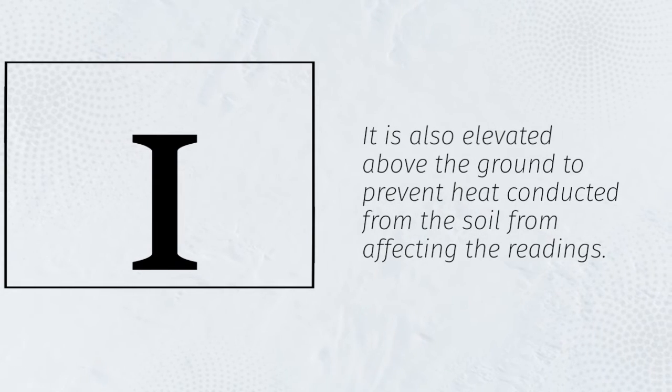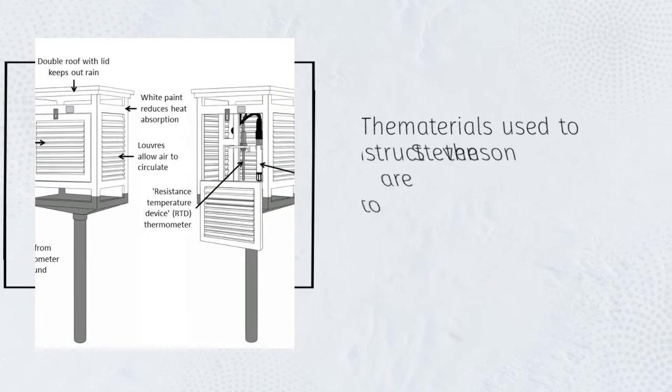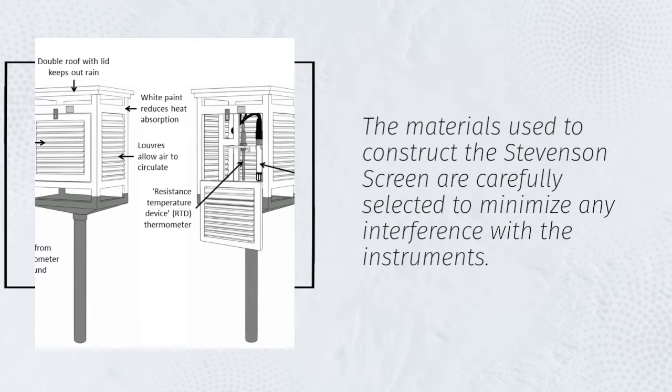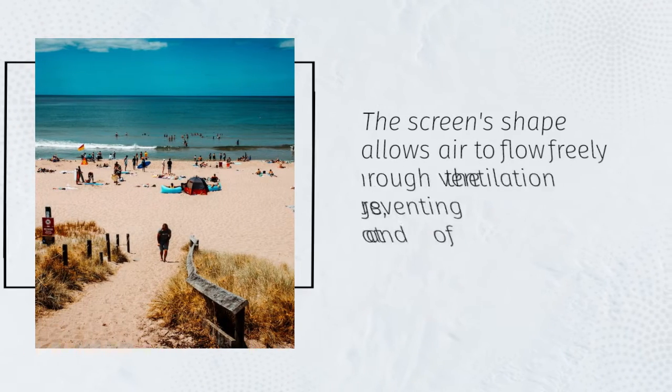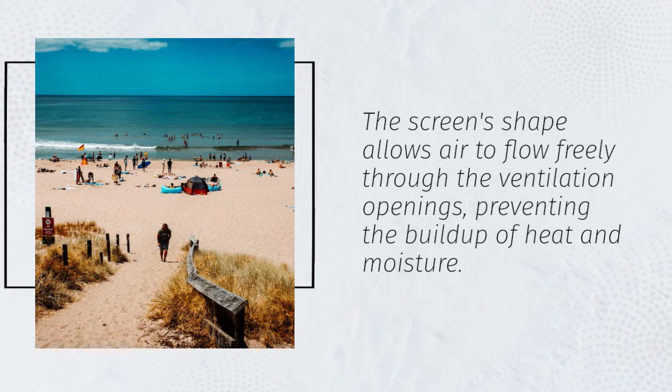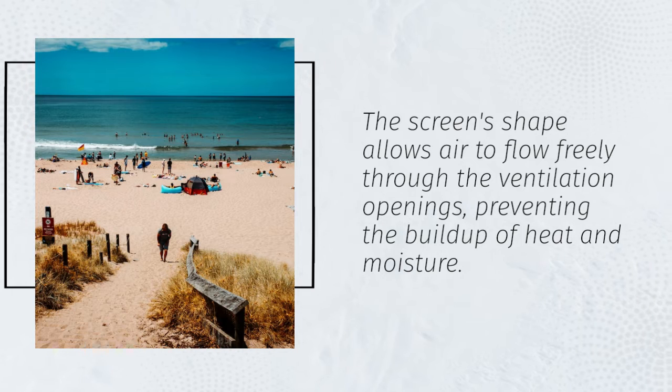The materials used to construct the Stevenson screen are carefully selected to minimize any interference with the instruments. The screen's shape allows air to flow freely through the ventilation openings, preventing the buildup of heat and moisture.